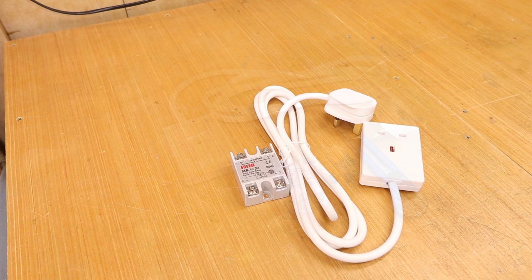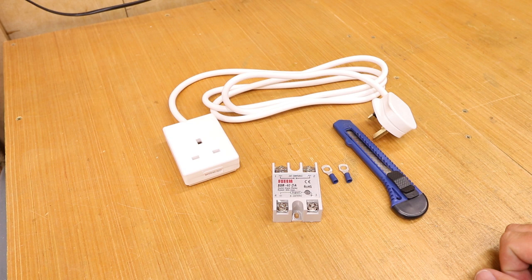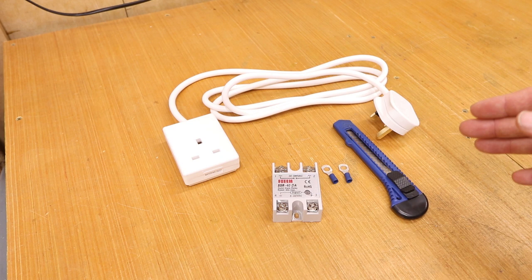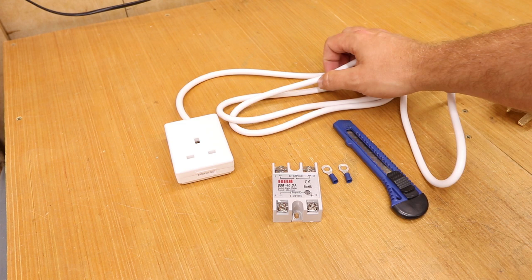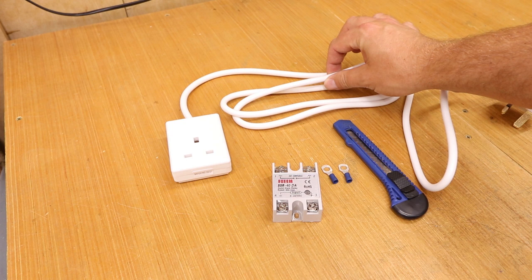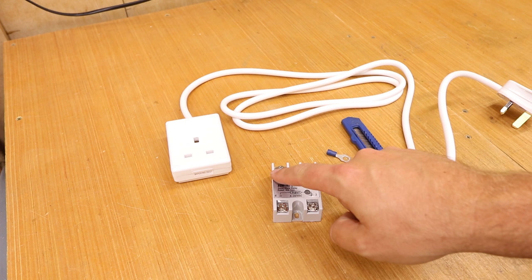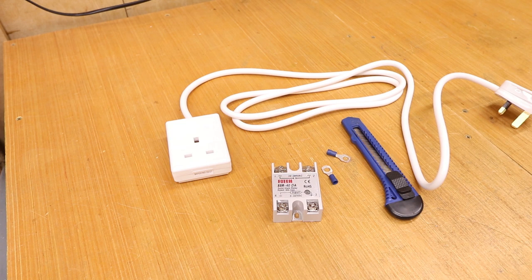You can wire the SSR anywhere along the lead that you like. Some people may find it easier to take the plug off or the socket end and start at one side or the other. For my purposes I want it about halfway down. I'm going to remove a couple of loops and cut through the white outer casing to expose the wires in the middle. I'm then going to cut only the live wire, attach crimp connectors on either end, and that will allow me to connect it to the top of the SSR.